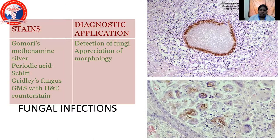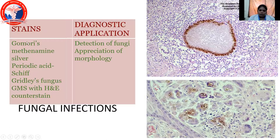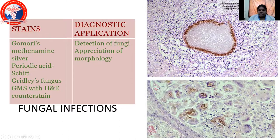Fungal infections also cause granulomatous inflammation. The special stains used are Gomori methenamine silver (GMS), periodic acid–Schiff (PAS), and GMS with H&E as a counterstain. Spine-like elements can be seen sitting inside the granuloma under these stains. All these also cause granulomatous inflammation.